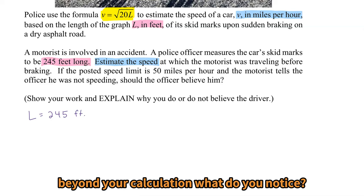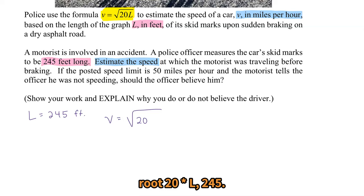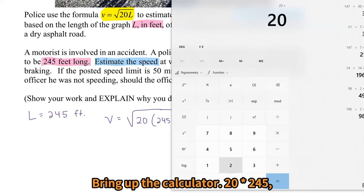So if I take the formula, V equals square root 20 times L, 245. Bring up the calculator, 20 times 245, take the square root, we get 70.